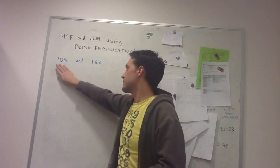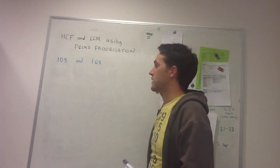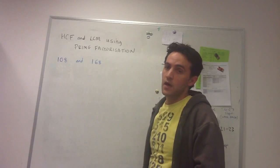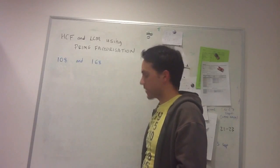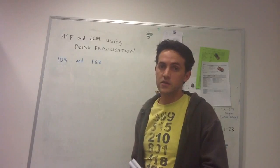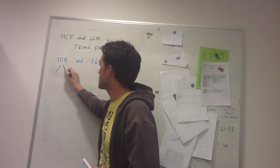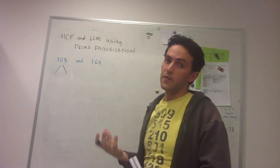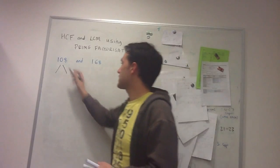So I'm going to do examples with 108 and 168. We start off by finding the prime factorizations of these numbers, and we can do this with factor trees. Remember, with factor trees we just find any two factors of that number that multiply together to give it.